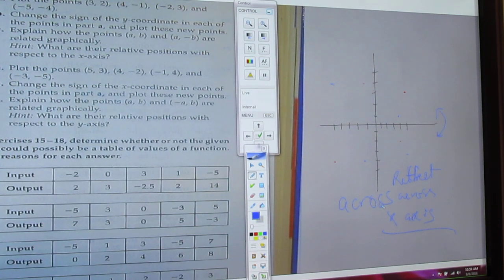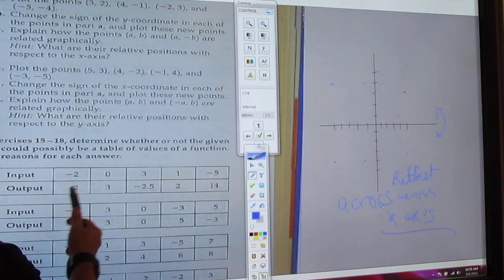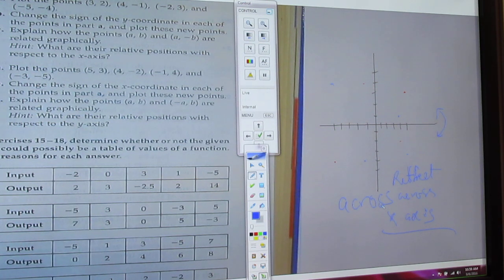And so now we look at 15. Determine whether or not it's a function. That's pretty simple. 15 is not a function if x comes up twice. Does x come up twice?